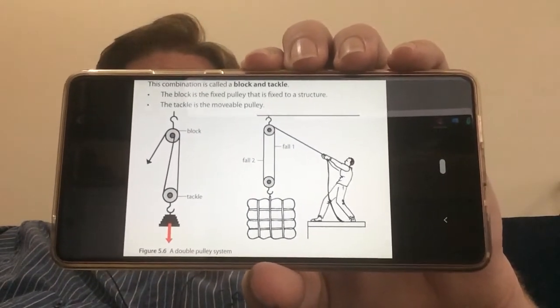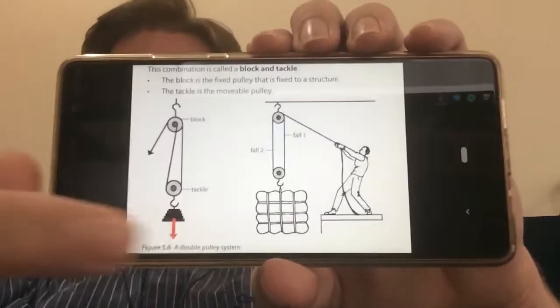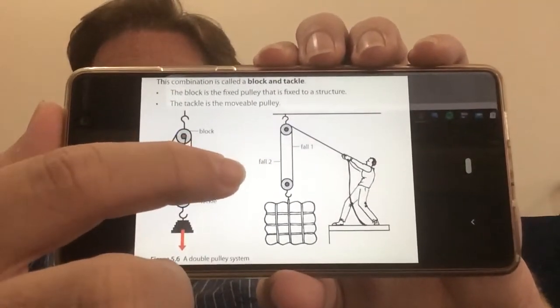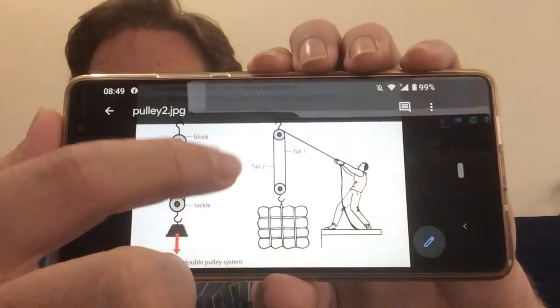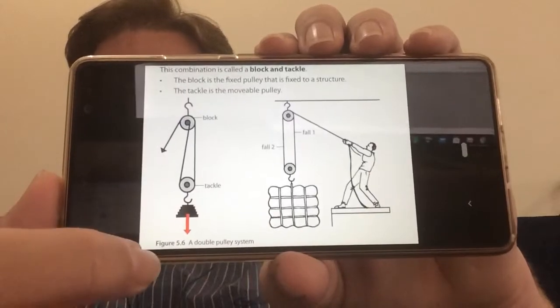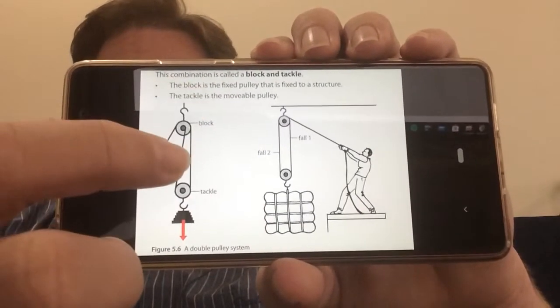For example, we've got here a block and tackle system. As soon as you've got two pulleys combined along the same rope and connected to your object, we call it a block and tackle system.